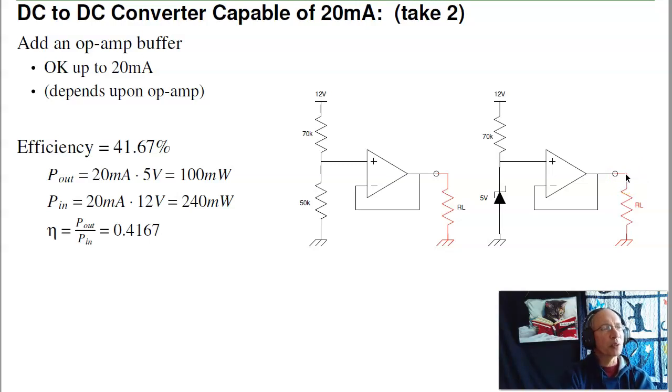The problem with this approach is the efficiency. If I want to deliver 20 milliamps to the load, I'm delivering 100 milliwatts to the load, 5 volts times 20 milliamps. The power supply, the op-amp is going to be powered by something, probably the 12 volt supply. That 20 milliamps has to come from somewhere. It's going to come from your 12 volt supply. So I'm using 240 milliwatts to drive 100 milliwatts. So I'm only 41% efficient.